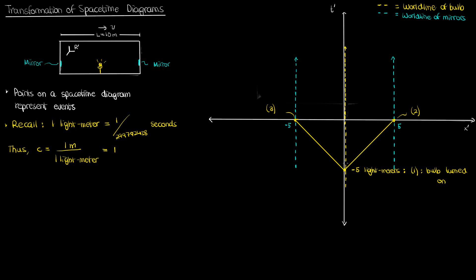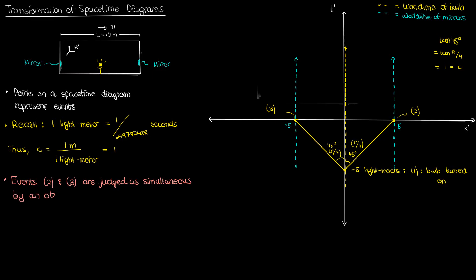The world lines of the photons — or light lines as they're sometimes called — are angled at 45 degrees relative to the vertical axis. That's because the tangent of 45 degrees is 1, equal to the speed of light in scaled units. Events 2 and 3 occur at the same time t' equals 0 according to an observer in r', meaning events 2 and 3 are simultaneous in the reference frame r'. After the photons hit the two mirrors they bounce back, and five light meters later they return to the light bulb. When both photons reach the light bulb I'll call that event 4.